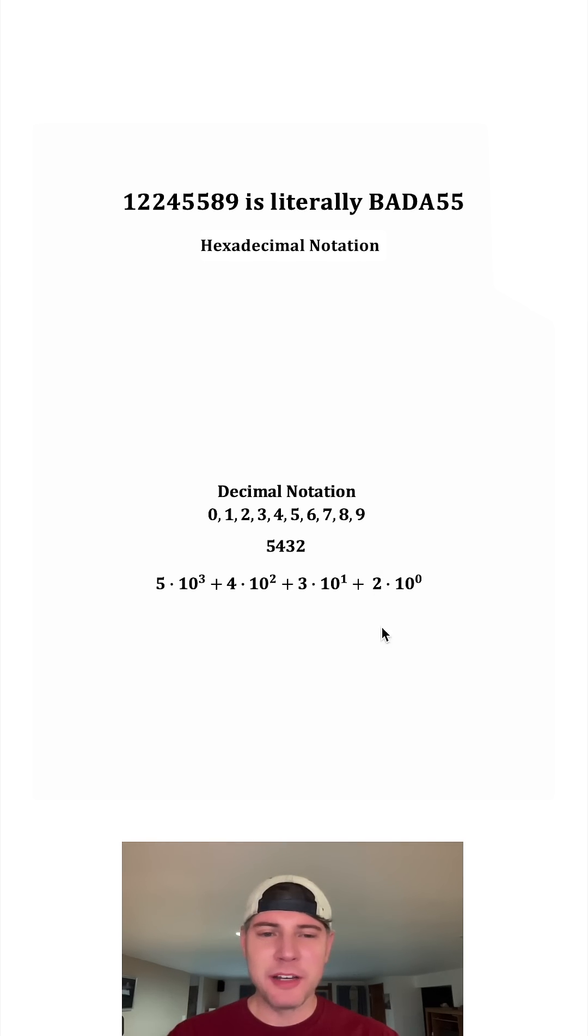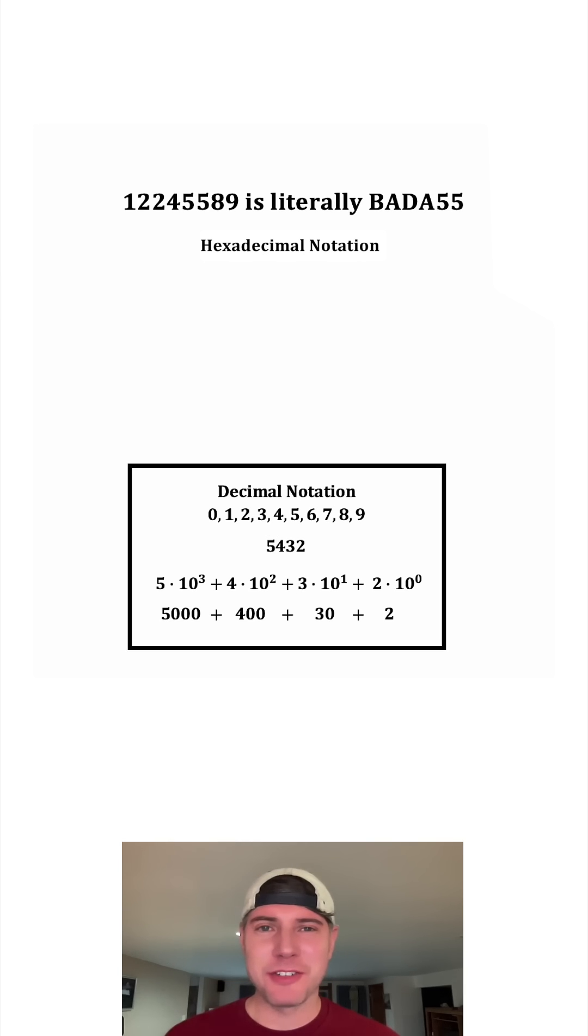10 to the 0 power is equal to 1, so this would be 2. And then 10 to the 1 is 10, which makes this 30. This is 400, and this is 5,000. And then we add all these up and we get the 5,432. This looks important. Let's put a box around it.